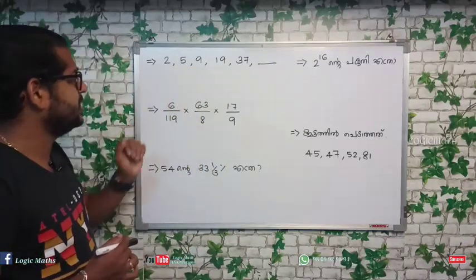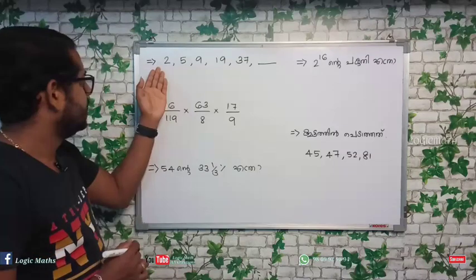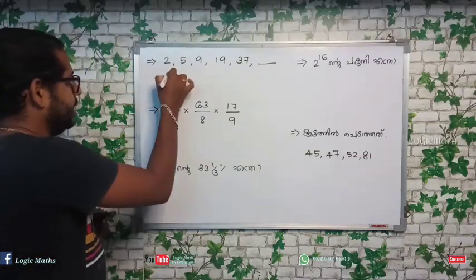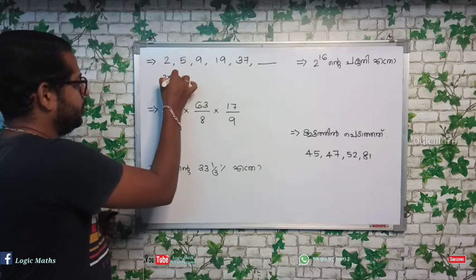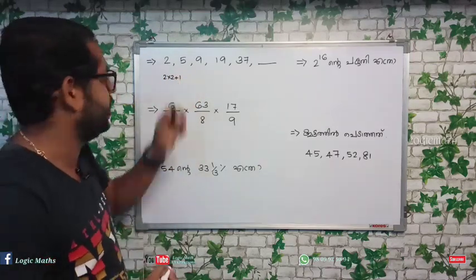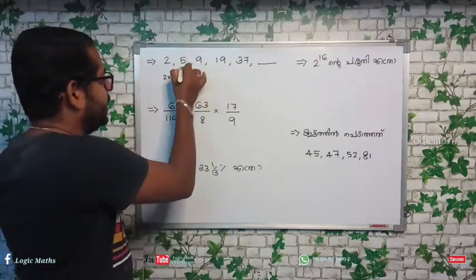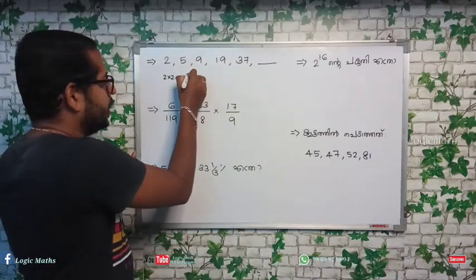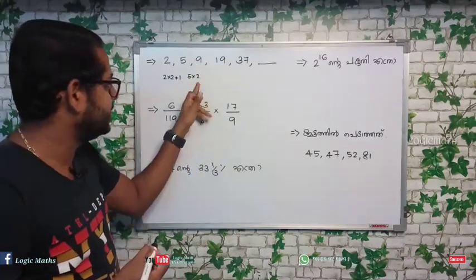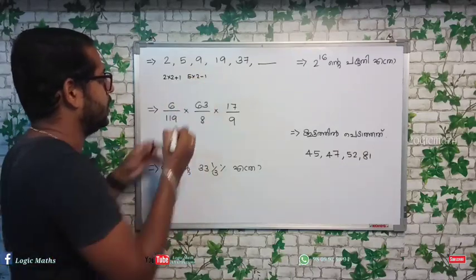First, number 25. If we have 5, we will multiply 2 into 2. This method is 2 into 2 plus 1. 2 into 4 is 4 plus 1 is 5. If we go to this method, 5 into 2 is 10, 5 into 10 is 10.